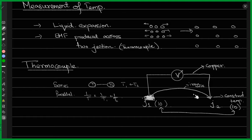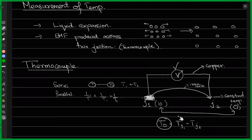If you know the temperature at J2, then from the voltmeter reading you get the temperature difference TD = T(J1) − T(J2). T(J1) is unknown and T(J2) is the known fixed temperature. The only unknown is T(J1), so you rearrange the equation and find the temperature at junction 1.